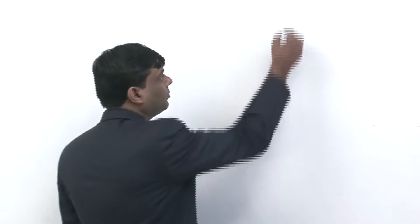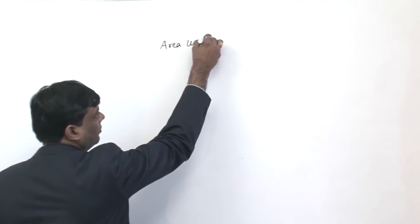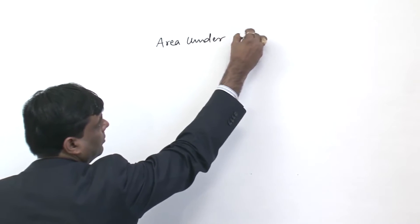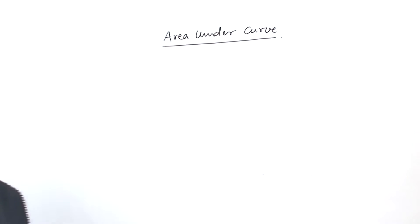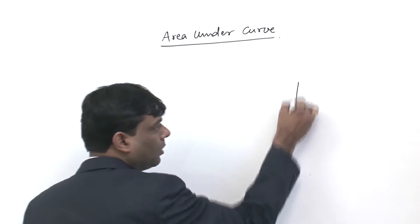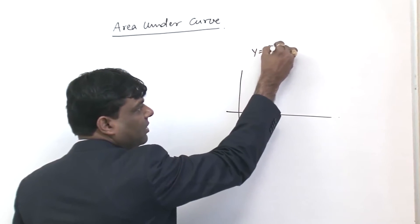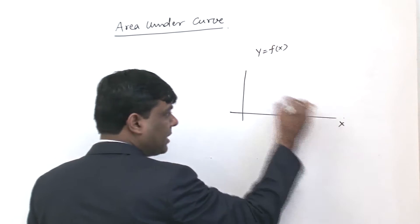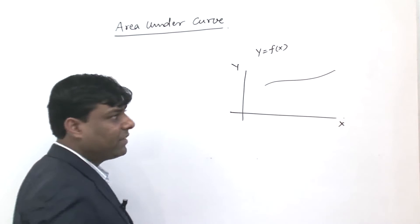Next chapter, we will see area under curve. What do we want to do here? y is equal to f(x) curve, here on the x-axis, here on the y-axis, and let us say this is f(x) is plotted.